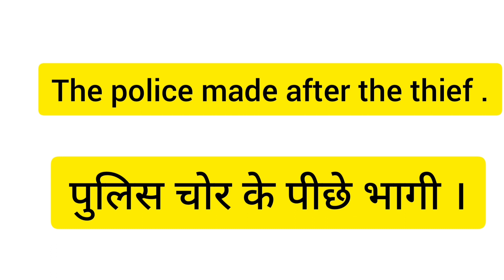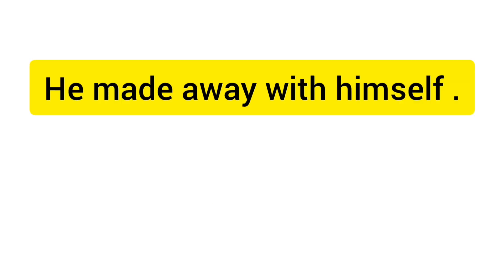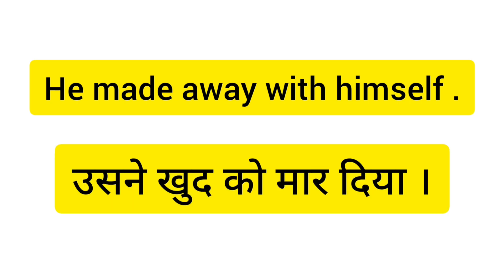Next is make-away. Make-away ka matlab hota hai kill — maar daalna. Example: 'He made away with himself.' Usne khud ko maar diya — khud ko kill kar liya.